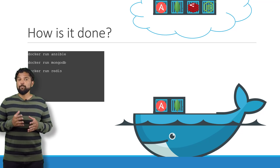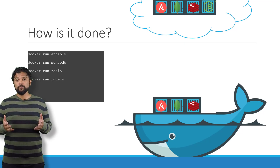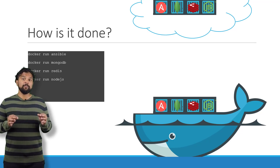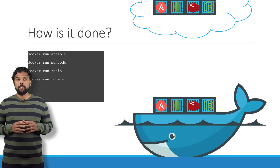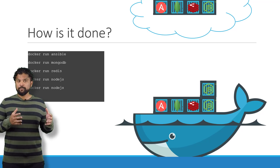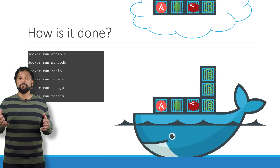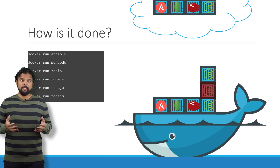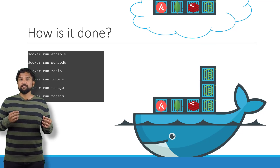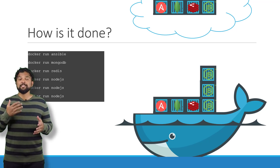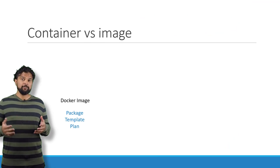Similarly, run an instance of MongoDB, Redis and Node.js using the Docker run command. When you run Node.js, just point to the location of the code repository on the host. If you need to run multiple instances of the web service, simply add as many instances as you need and configure a load balancer of some kind in the front. In case one of the instances was to fail, simply destroy that instance and launch a new instance.